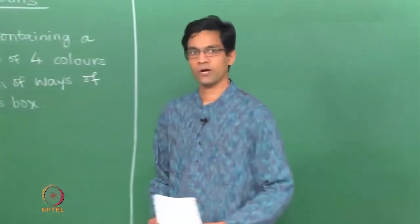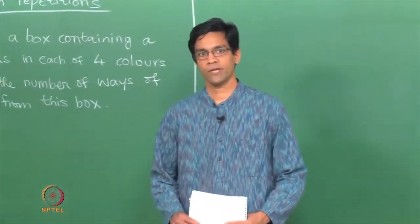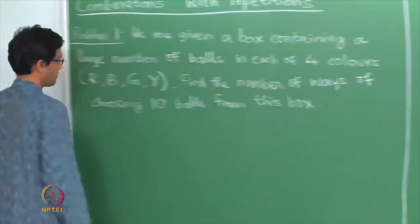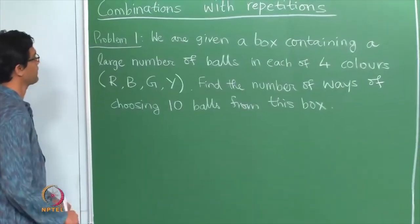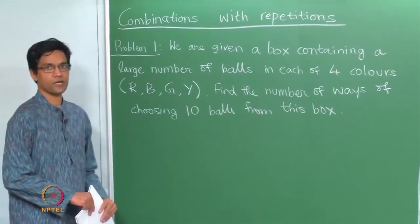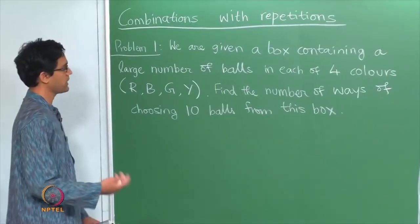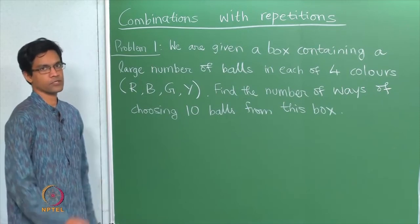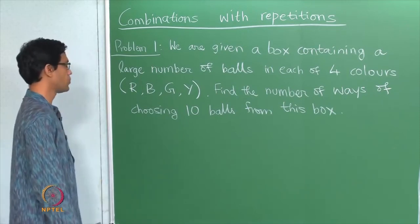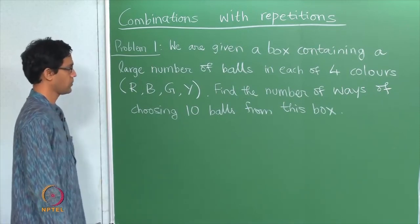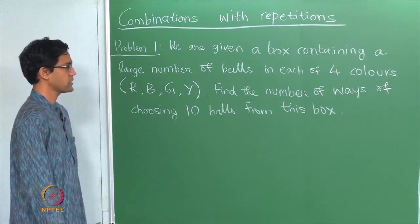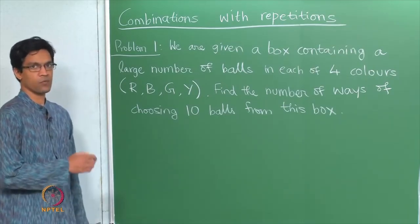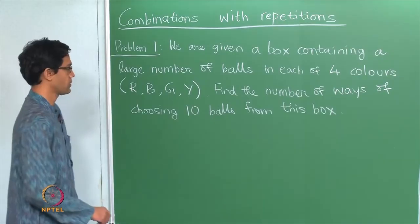Welcome. Today we are going to talk about combinations with repetitions. Here is a typical problem: we are given a box which contains a very large number of balls in each of 4 colours — red, blue, green and yellow. The question is: find the number of ways in which one can choose 10 balls from this box.